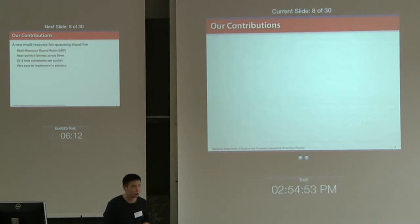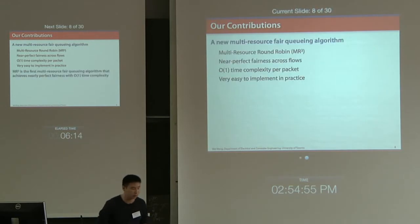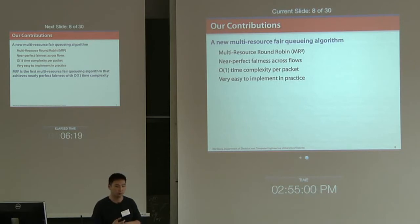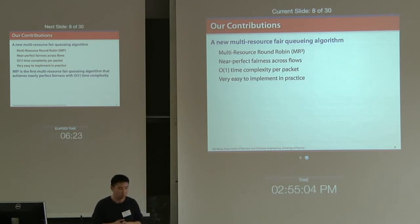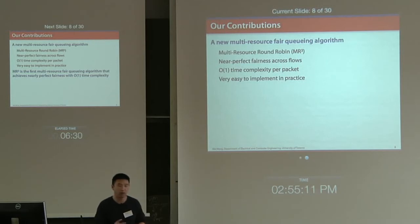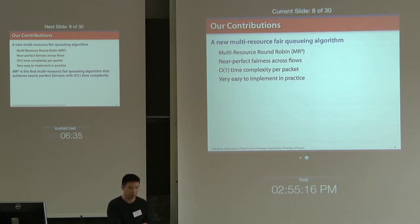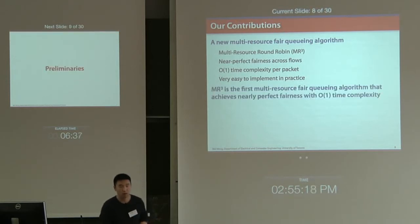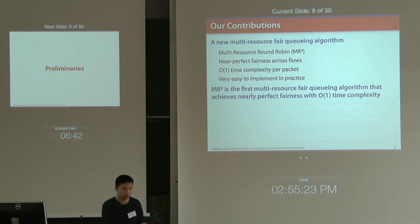In light of this problem, in this paper we design a new multi-resource fair scheduling algorithm called Multi-Resource Round-Robin, or MRRQ. We show that it achieves near-perfect fairness across flows with only constant time complexity to make a scheduling decision. It is also very easy to implement in practice. To our knowledge, this may be the first multi-resource fair scheduling algorithm with these nice properties.